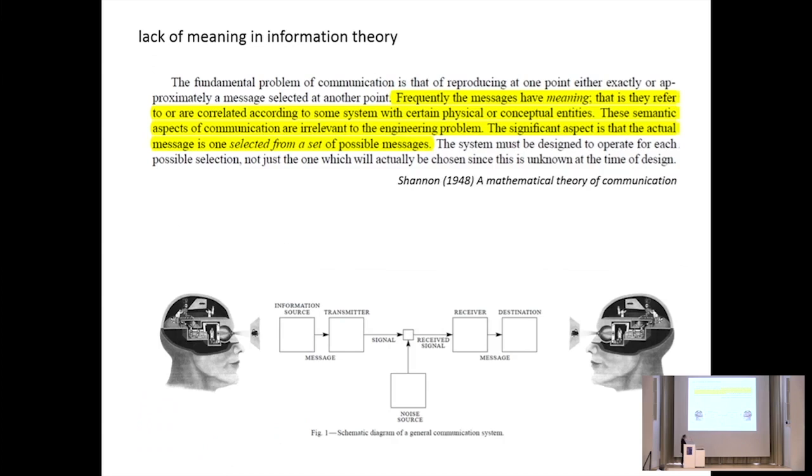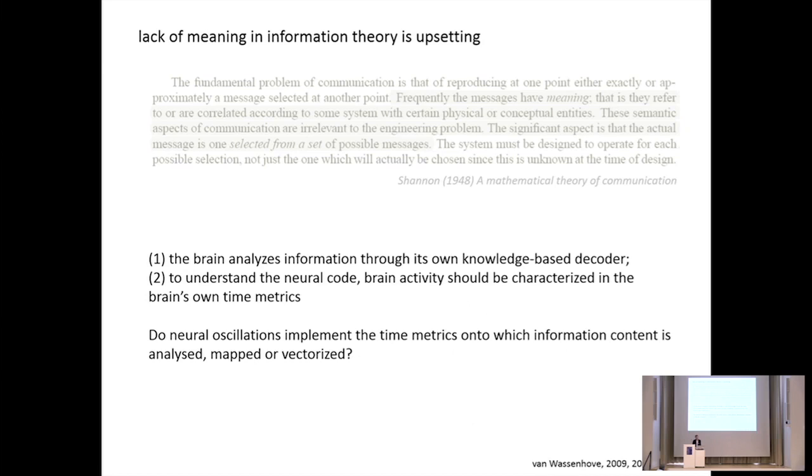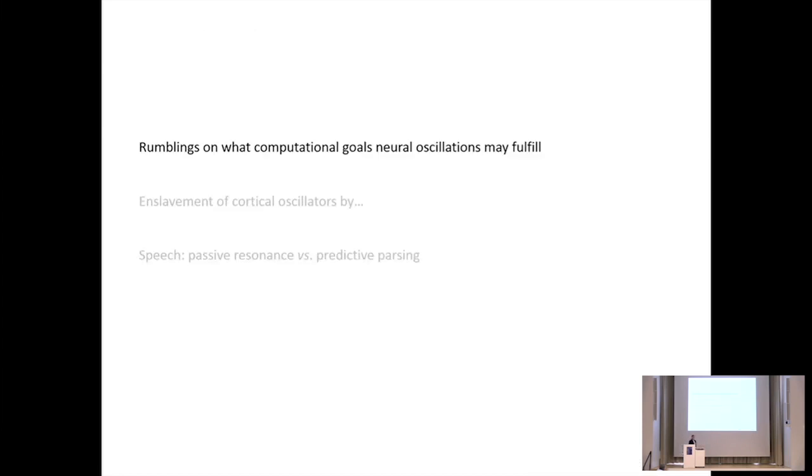By rereading Shannon recently, I bumped into these few sentences there. You can read in yellow. And the one being most relevant is the semantic aspects of communication are irrelevant to the engineering problem. Yet, we approach the brain, we tend to approach the brain as an information processing system. So I put it out there because I think sometimes we forget that we're dealing with a biological entity, and information theory might have its limits. In any case, I guess oscillators will sort of agree with the notion that neural oscillation may actually implement a time matrix for information processing in the brain, at least when we come from a speech aspect.